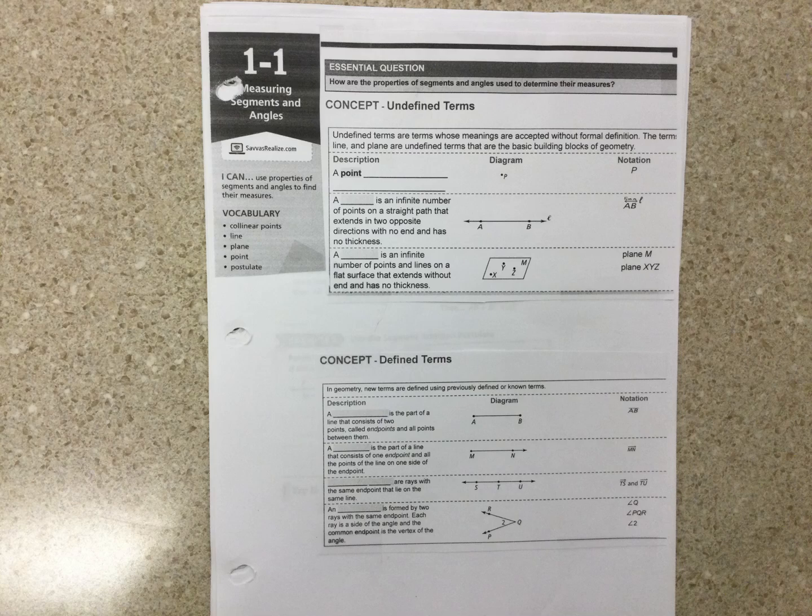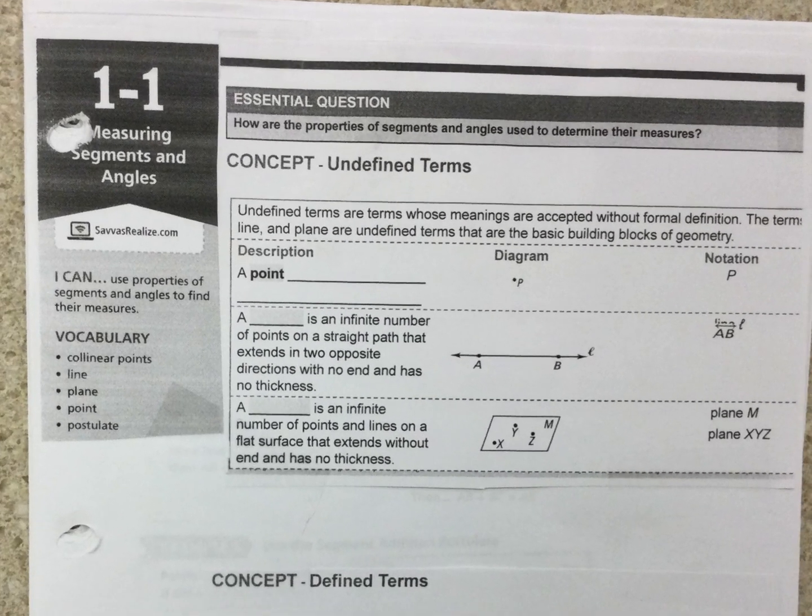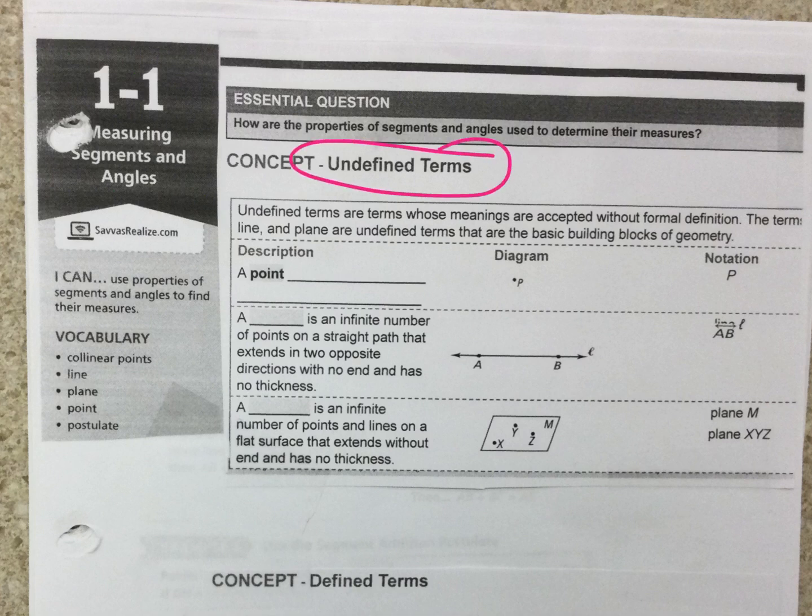Okay, so this is lesson 1.1 and we are going to measure segments and angles and we start with some vocabulary. Vocabulary is very important in geometry and all the vocabulary is built on what we call undefined terms, and there's just three of them.